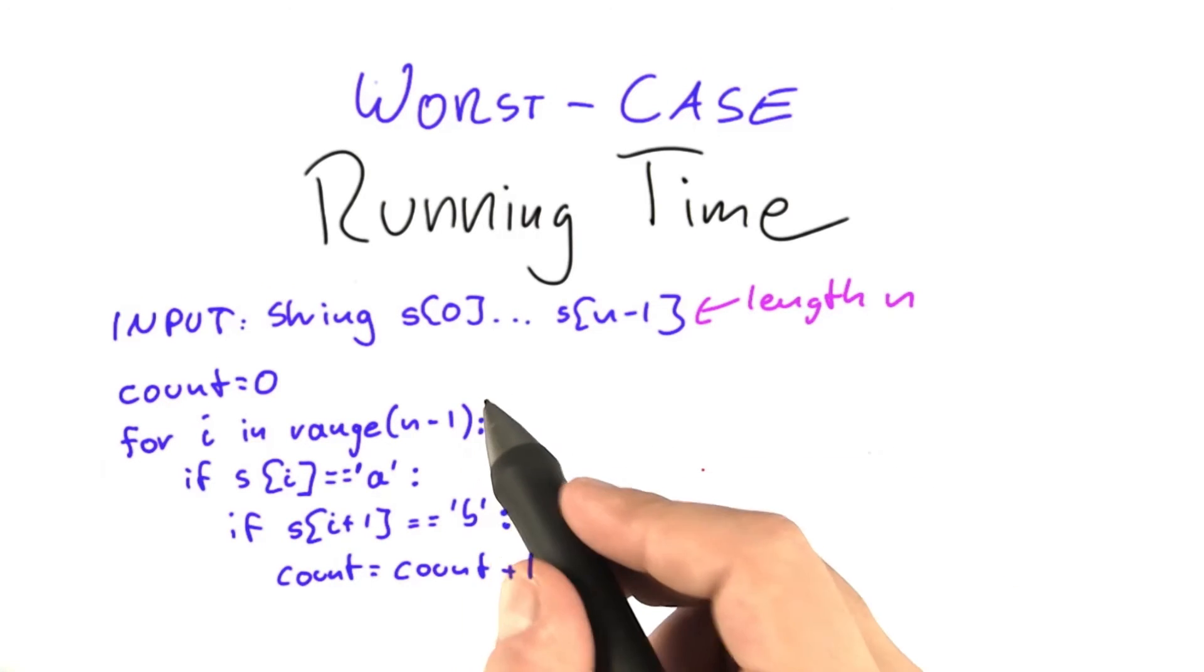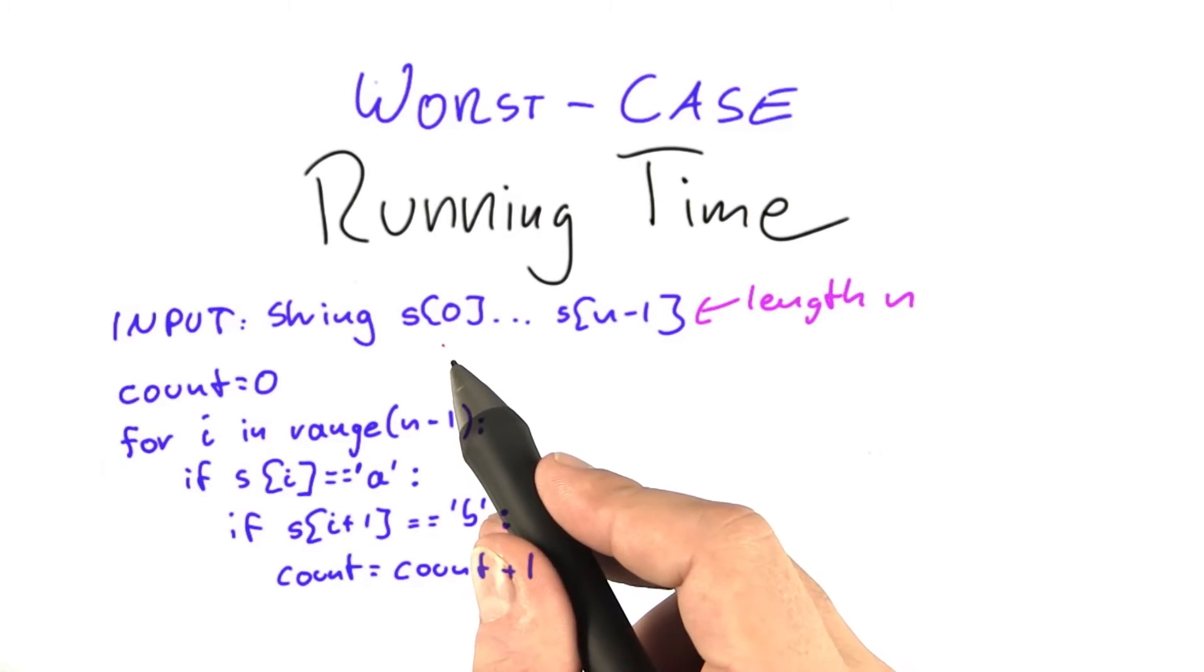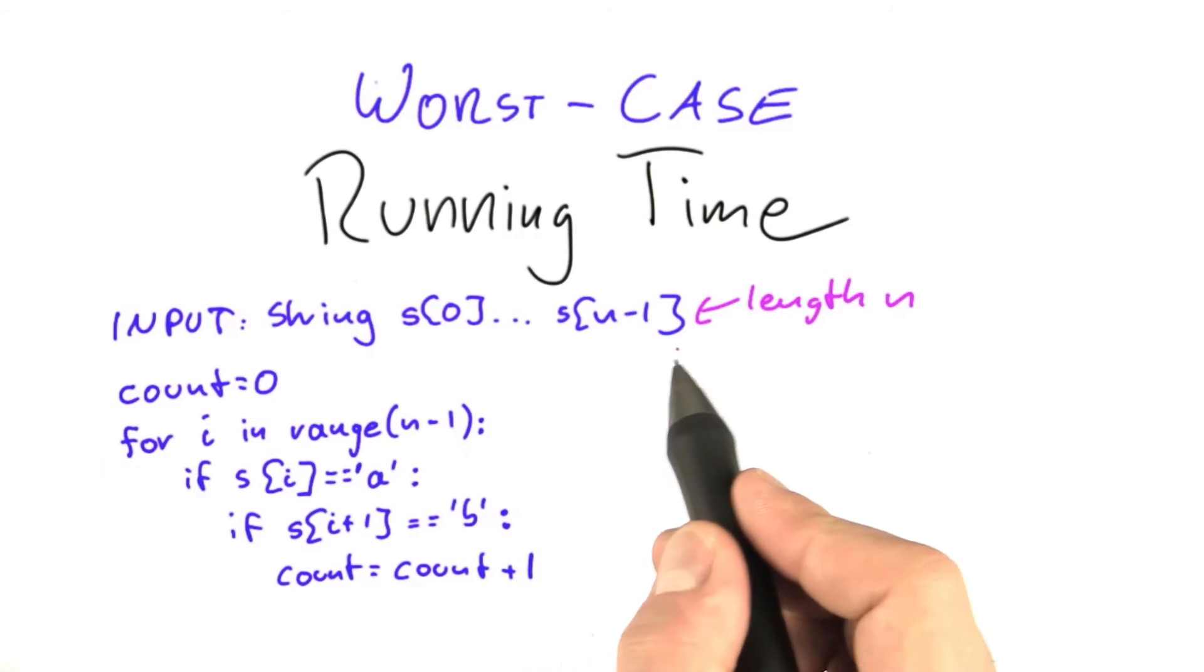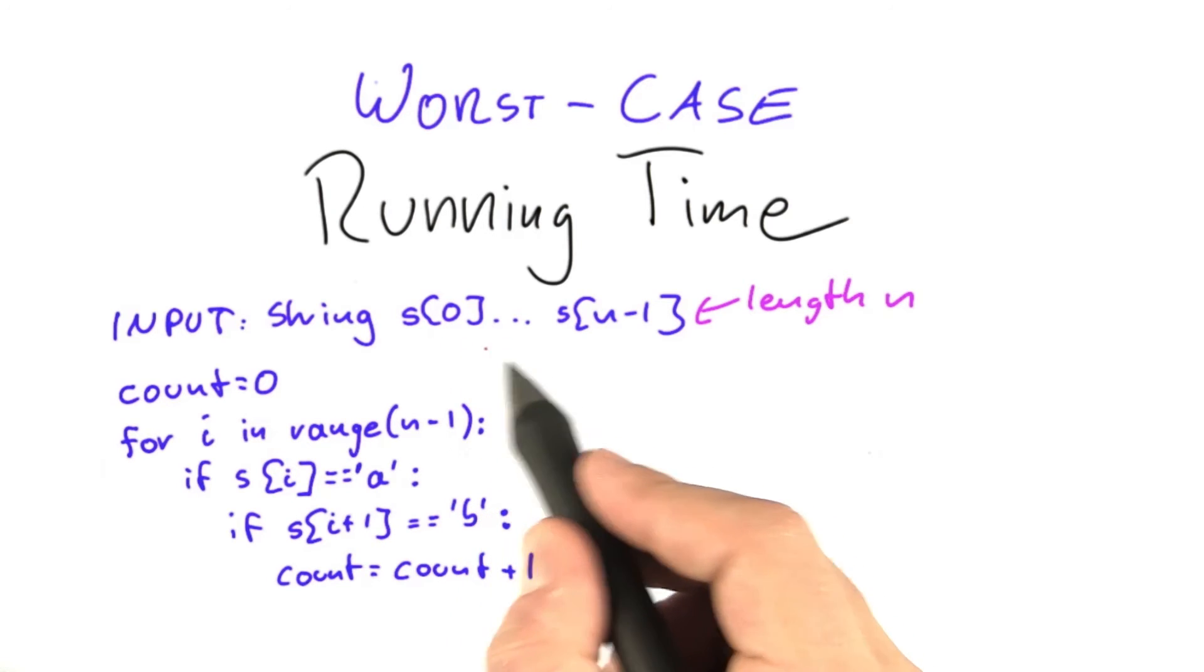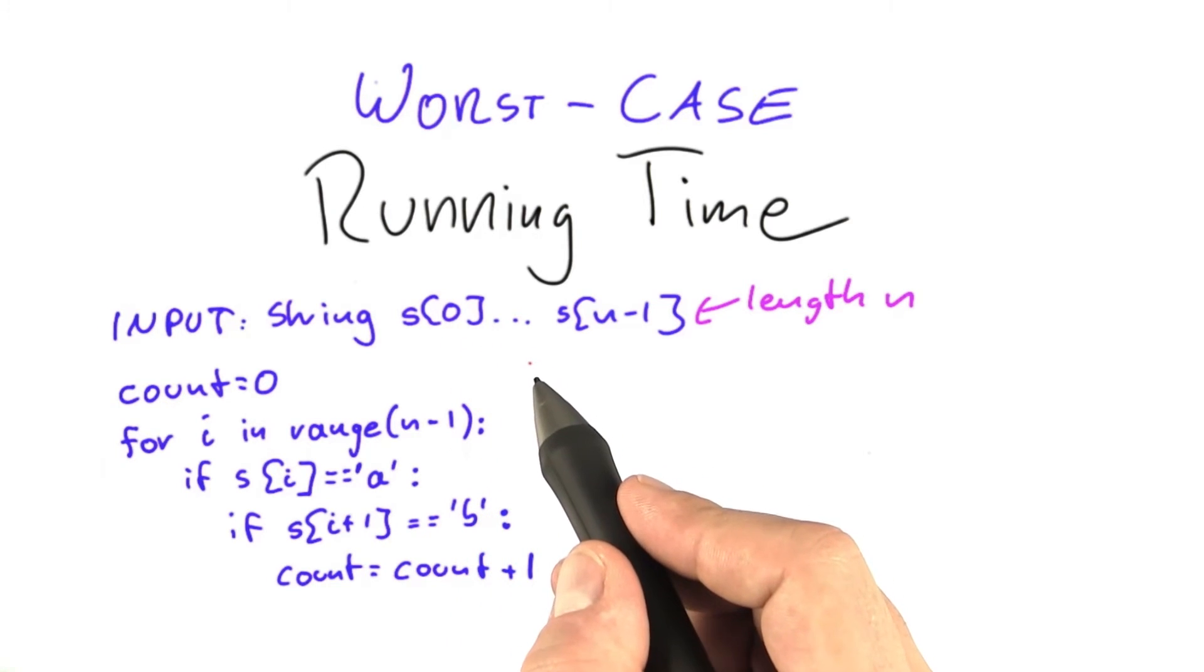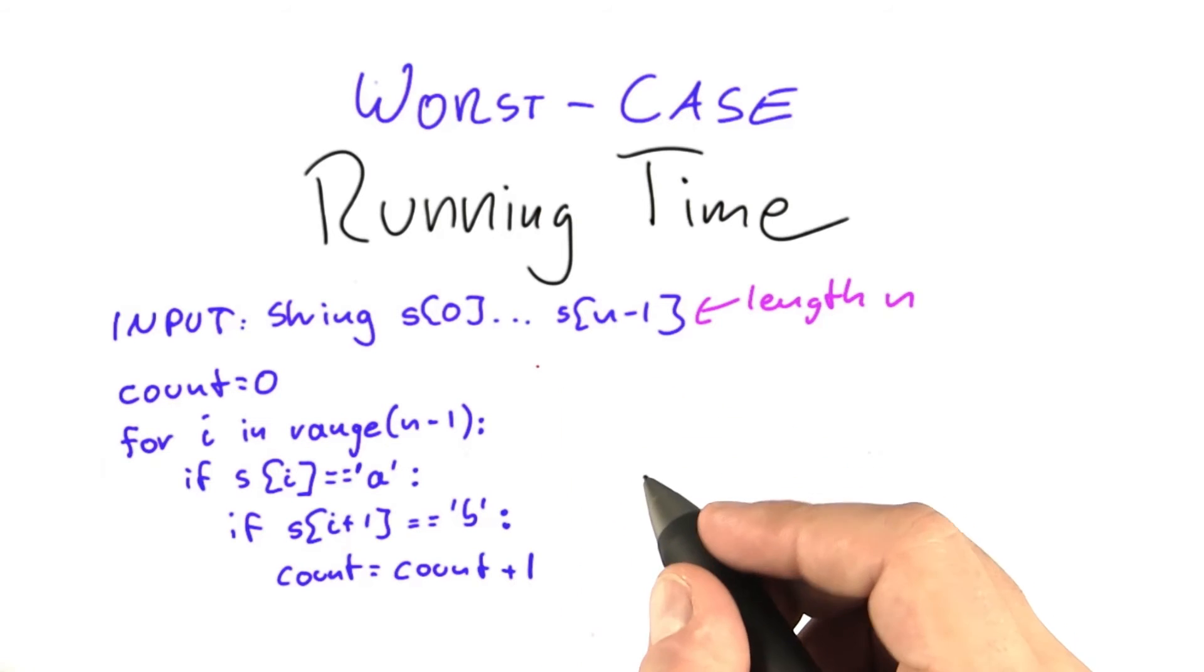So the first observation you can make is that the algorithm will actually go through the string one by one, and since it always just looks at a single character and the next character, the algorithm will look at each character in the input string at most twice.